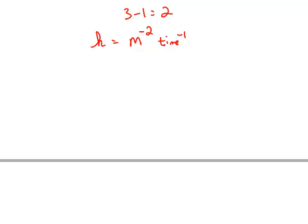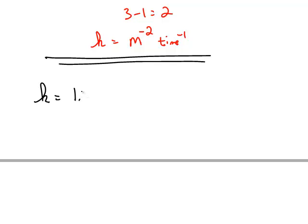You should also be able to go in reverse. So for example, if you were given a rate constant k that was 1.4 times 10 to the negative 5th years to the negative 1, you should be able to take this k and figure out what the overall order of the reaction is.